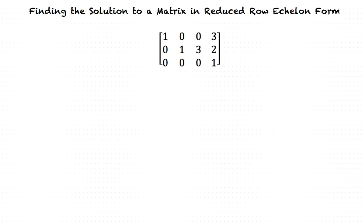Row 2: 0, 1, 3, 2. Row 3: 0, 0, 0, 1. Now we can write the matrix in the form of a system of equations.